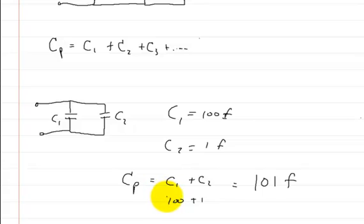Then just plug in the values. So 100 farads plus 1 farad equals 101 farads. And that's just how you add up capacitors in parallel.